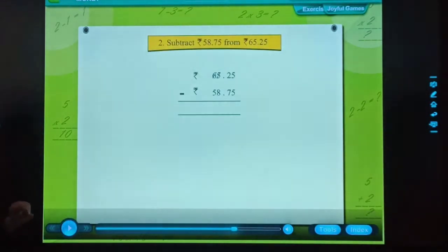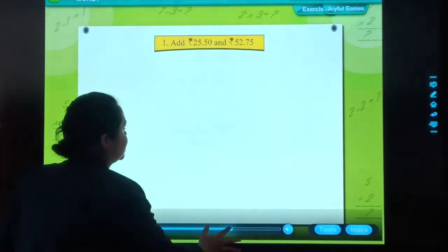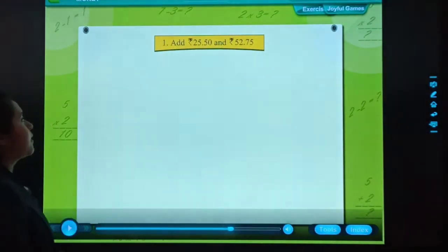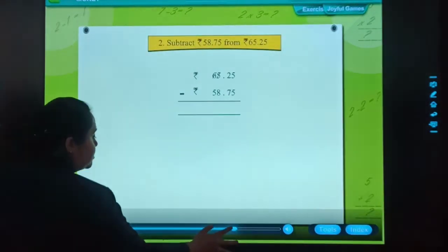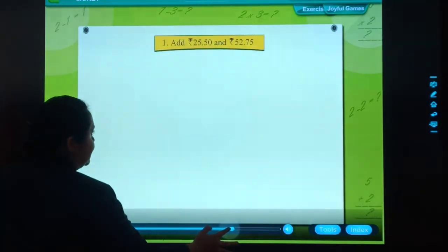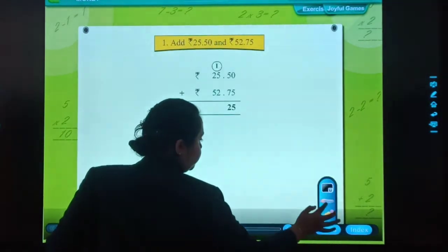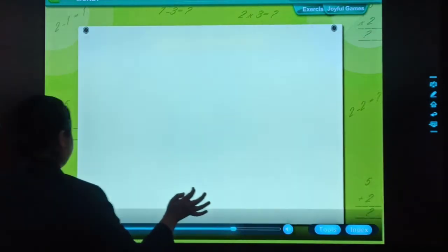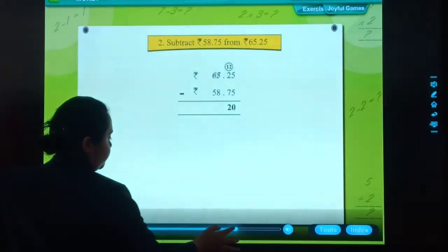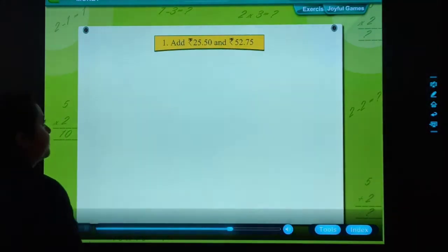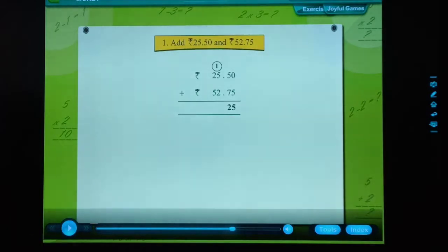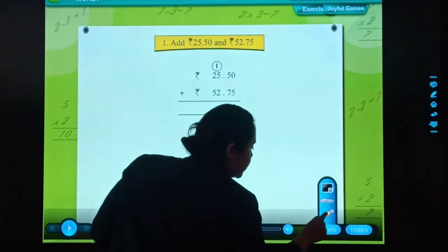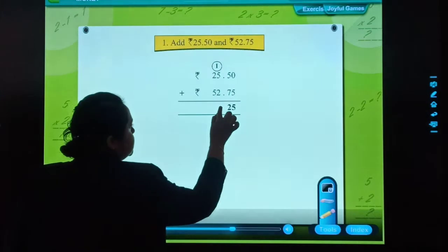Subtract rupees. Students, in this you have to take care of where you place the decimal in a series. Subtract rupees 58 and 75, 50 paise from rupees 52 and 75 paise. Done. So students, you need to take care of where you place the decimal in a series.